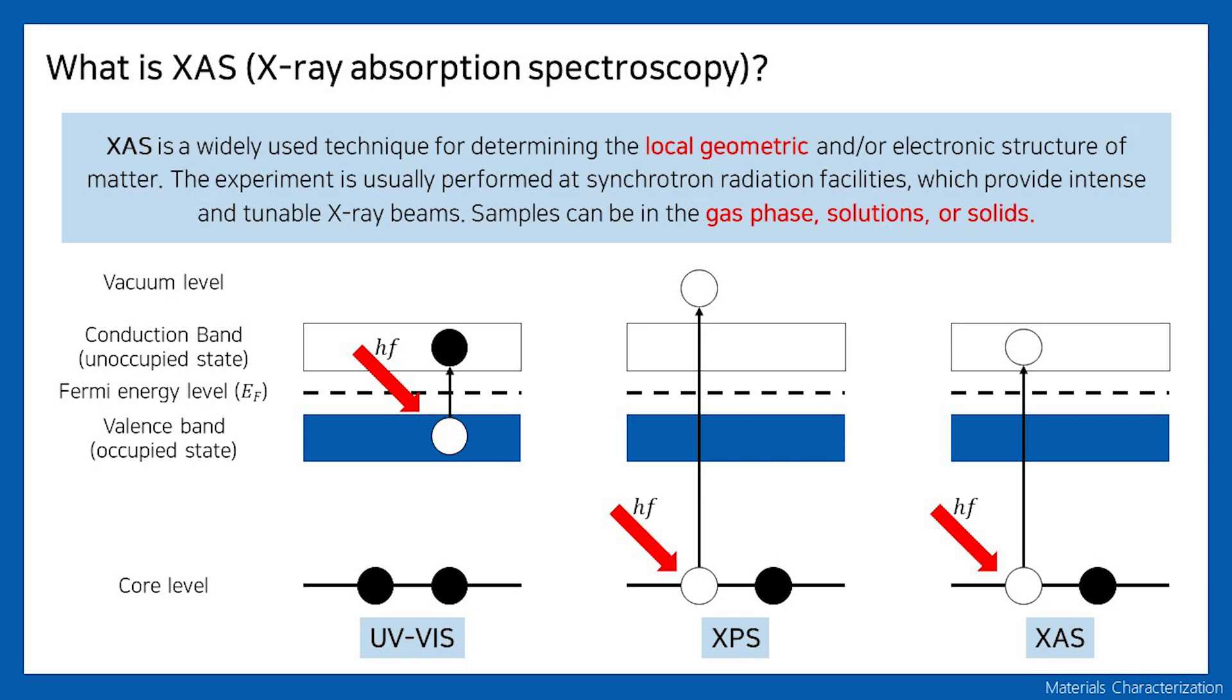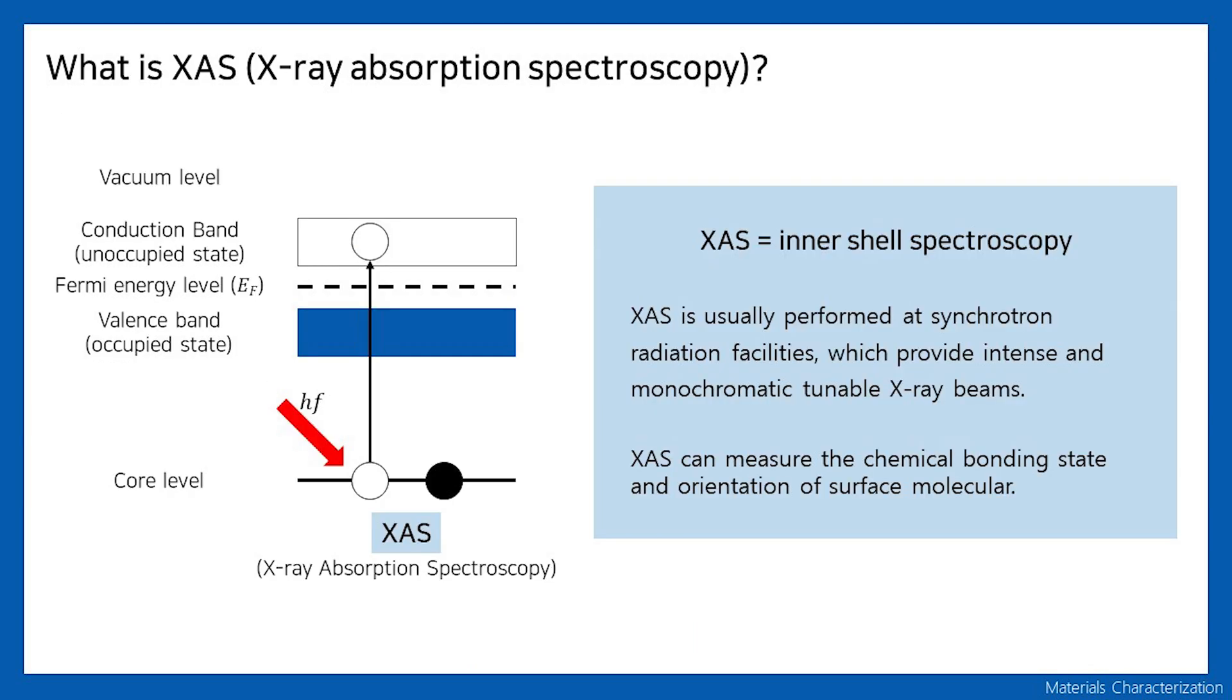XPS uses an X-ray light source targeting the core electrons. XPS measures the kinetic energy of photoelectrons produced by X-ray absorption. XAS is similar to XPS in that it uses X-ray and it is similar to UV-Vis in that it measures the absorption spectrum. Therefore, XAS is called inertial spectroscopy.